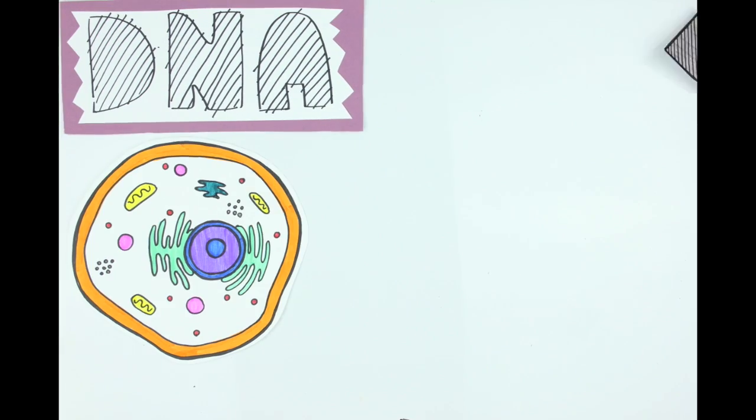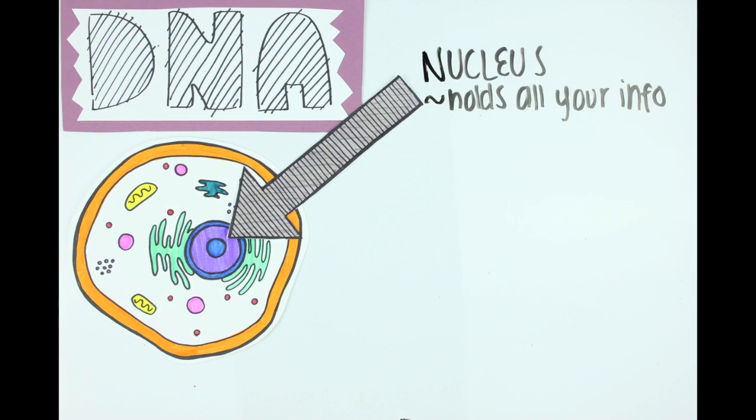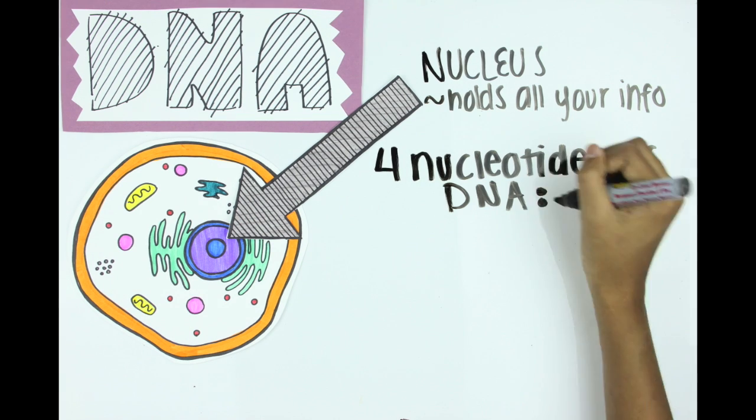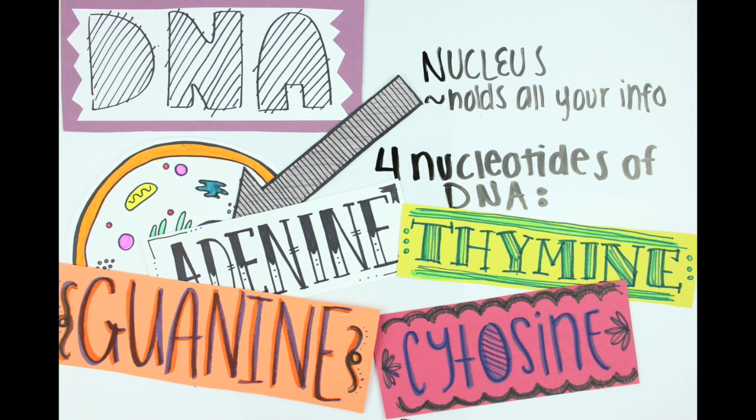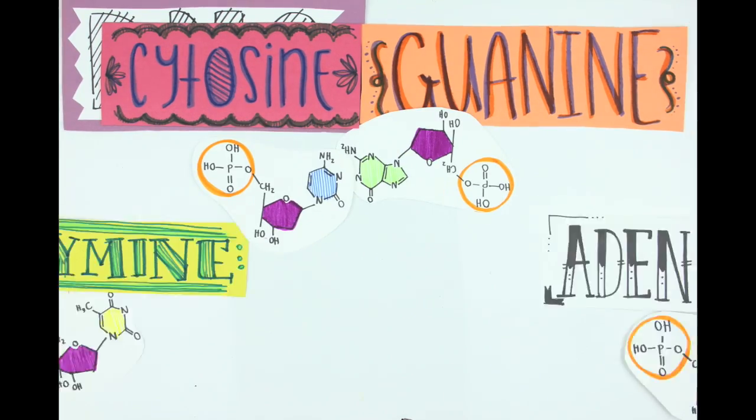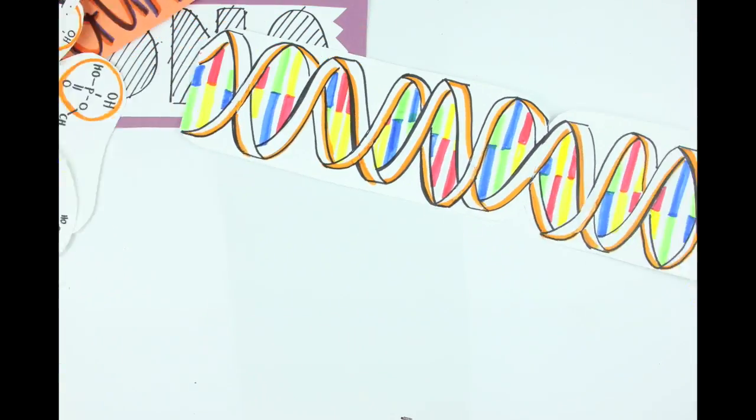So we've all heard of DNA. It's stored in the nucleus of each cell and holds all your information, but surprisingly, the whole thing is only made up of just four nucleotides that vary in their nitrogen base: adenine, thymine, guanine, and cytosine. Cytosine always pairs with guanine, and thymine always pairs with adenine.